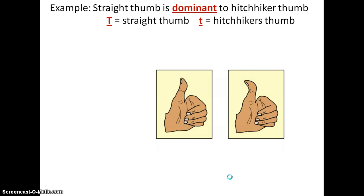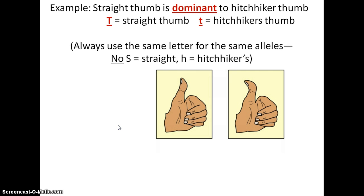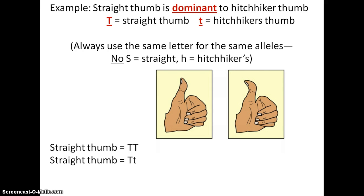Another example is hitchhiker's thumb — look at your thumb now and see if you have one. If you do, it's a recessive trait, meaning you got the recessive allele from both of your parents. If you don't, you're showing the dominant trait and could either be homozygous dominant (big T, big T) or heterozygous (big T, little t), but you'll show that trait either way. When representing this, remember to use the same letter for both alleles, and choose letters that look clearly different in upper and lowercase.